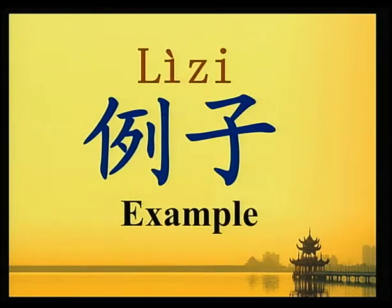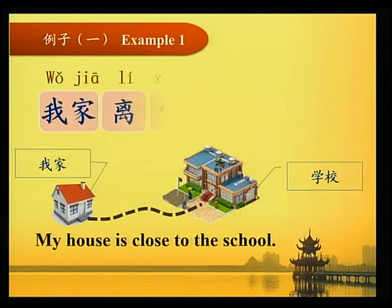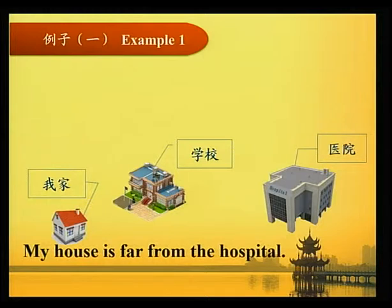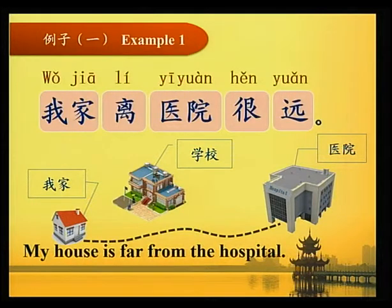例子 Examples. Example one: 我家离学校很近 — My house is close to the school. 我家离医院很远 — My house is far from the hospital.